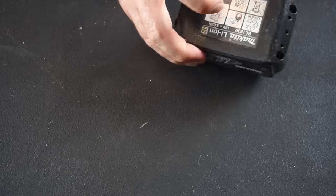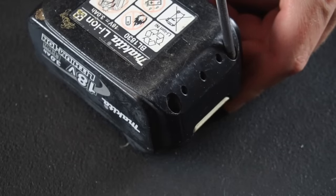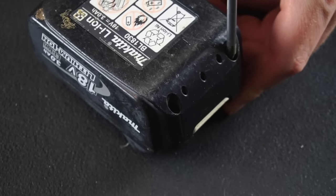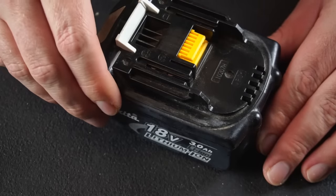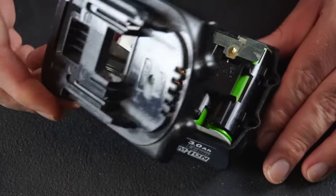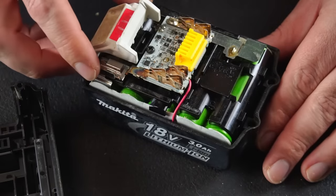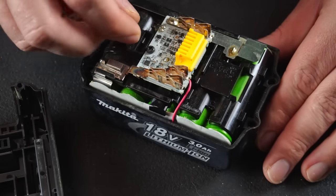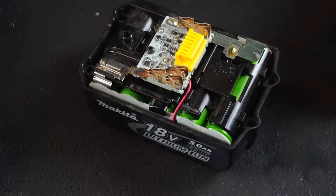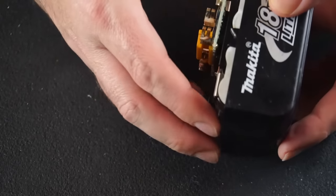First I removed the four security torque screws from the underside of the battery. Now I can remove the top cover along with the latch and spring. I can now slide out the cell pack.